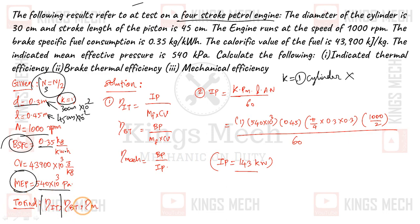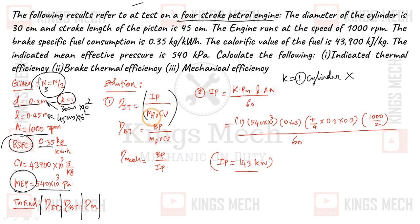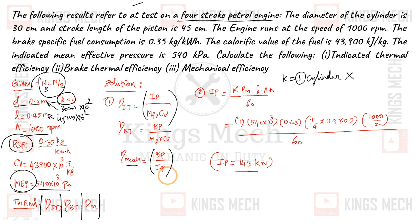To find: indicator efficiency = IP divided by (mf × CV). Brake thermal efficiency = brake power divided by (mf × CV). Mechanical efficiency = brake power divided by indicator power.